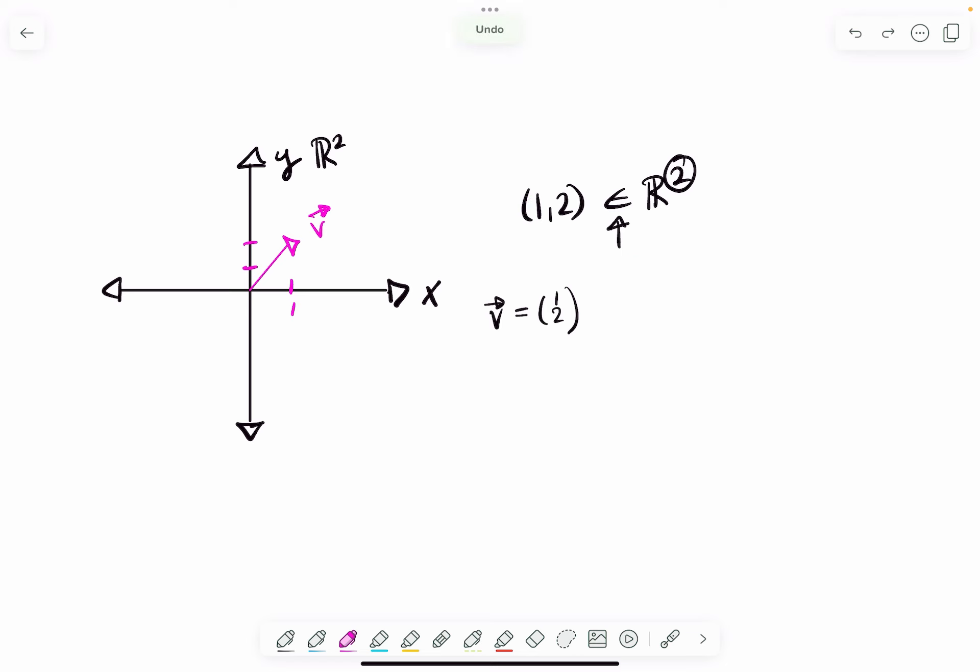And similarly, we say that this vector is an element of—that's what the symbol means—the set of all real two-dimensional vectors.